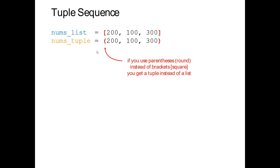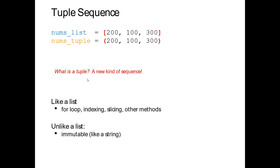Our first new data type is the tuple. Here I'm creating a list of numbers using square brackets. Tuples are a lot like lists — the only difference in creation is using smooth round parentheses instead of square brackets. They are sequences just like lists — we can index into them, iterate over them with for loops, do slicing, and use methods like length. The only major difference is they're immutable — once we've created a tuple we cannot change it.